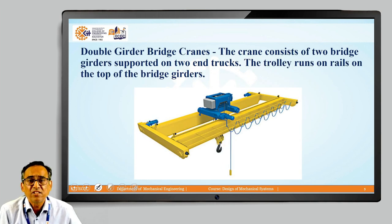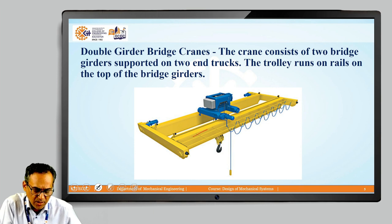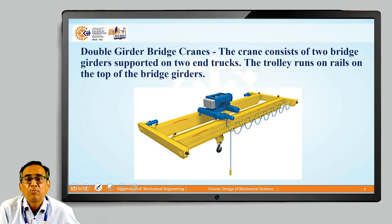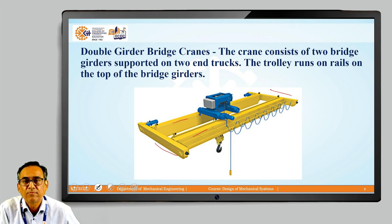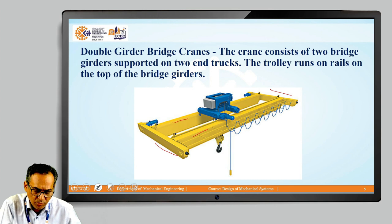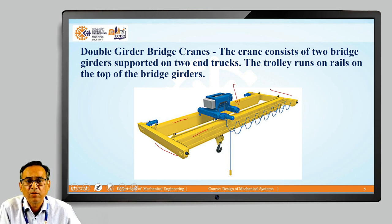The next is the double girder bridge crane. In this double girder bridge crane, it consists of two bridge girders — this one and this one — supported on two end trucks. The trolley runs on a rail on the top. In the case of the single girder crane, it was on the bottom side of the girder; here it will be on the top side of the girder. This is the double girder bridge crane.